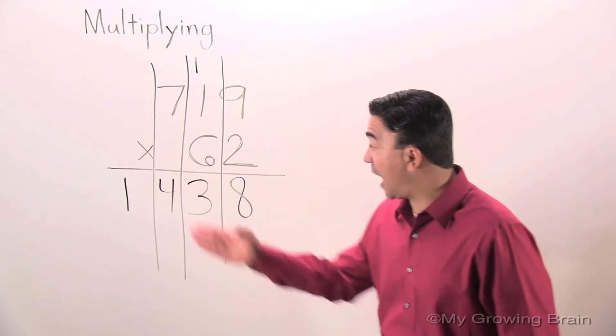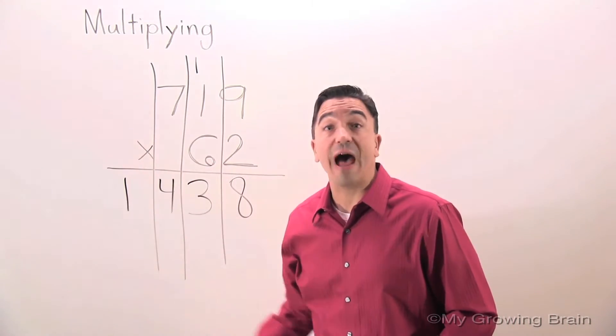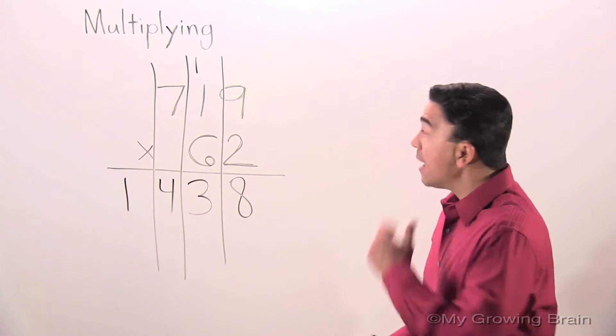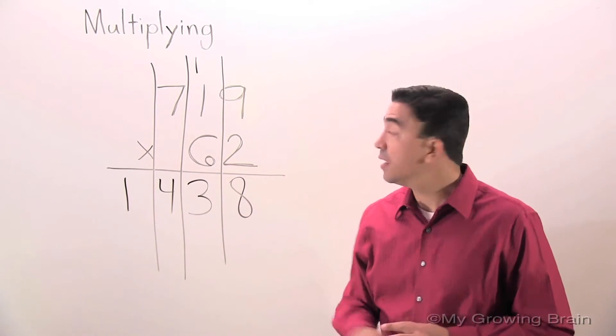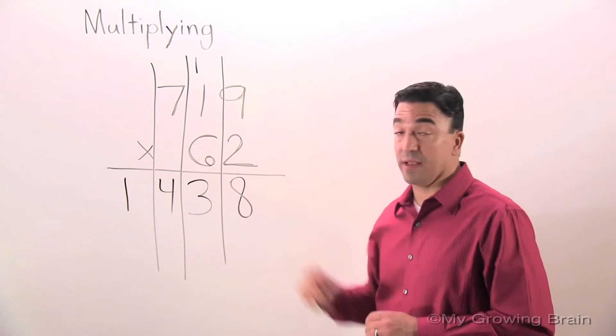As you can see, I put the one in the thousands place. Now, we're going to multiply the six in the tens place.